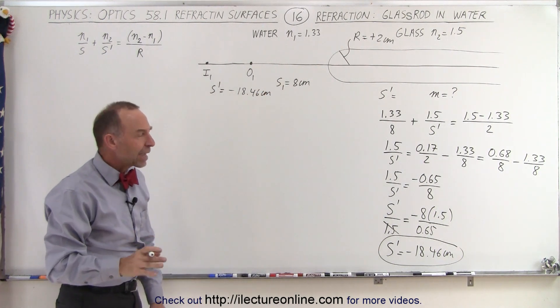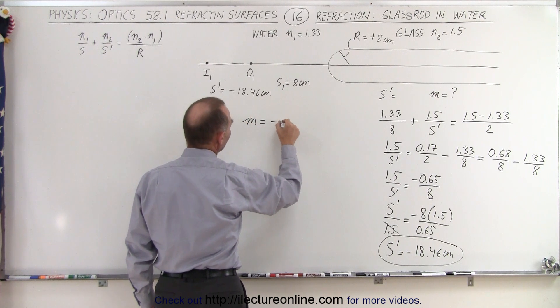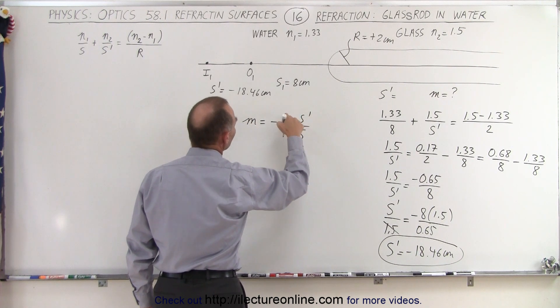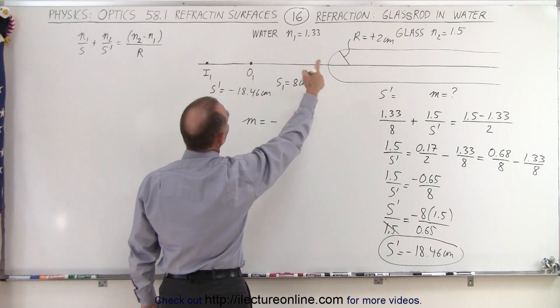What about the magnification? The magnification is equal to minus s prime over s. The indices of refraction for s prime, we're now going to associate that with n1, and s with n2 in this equation.